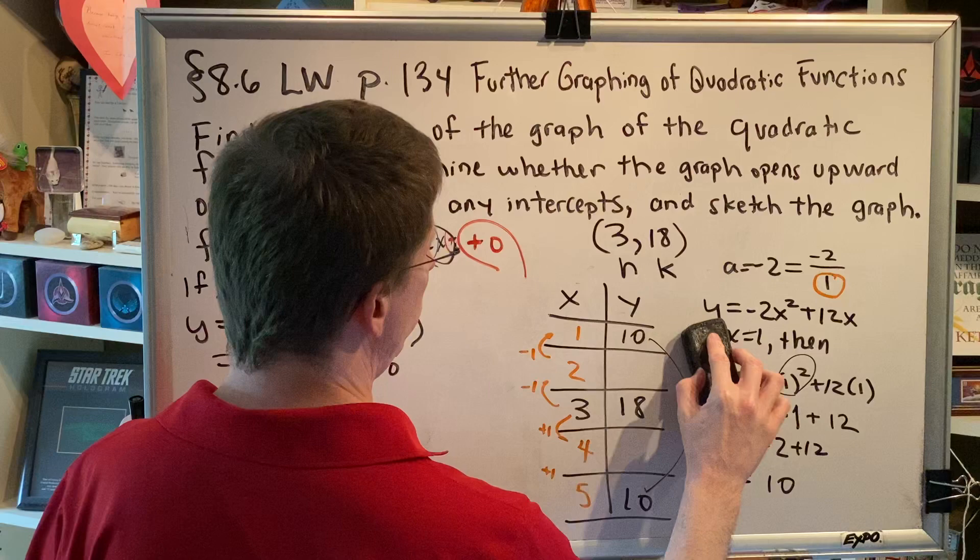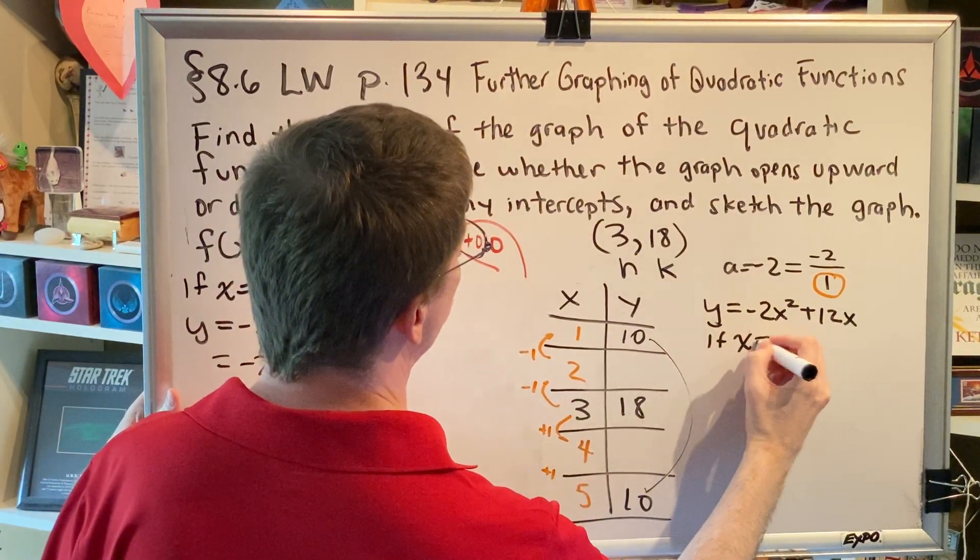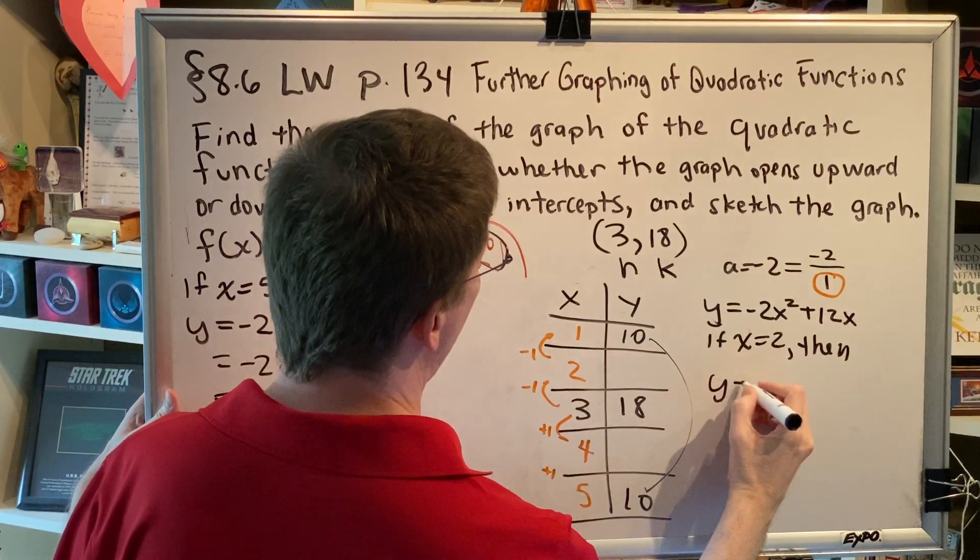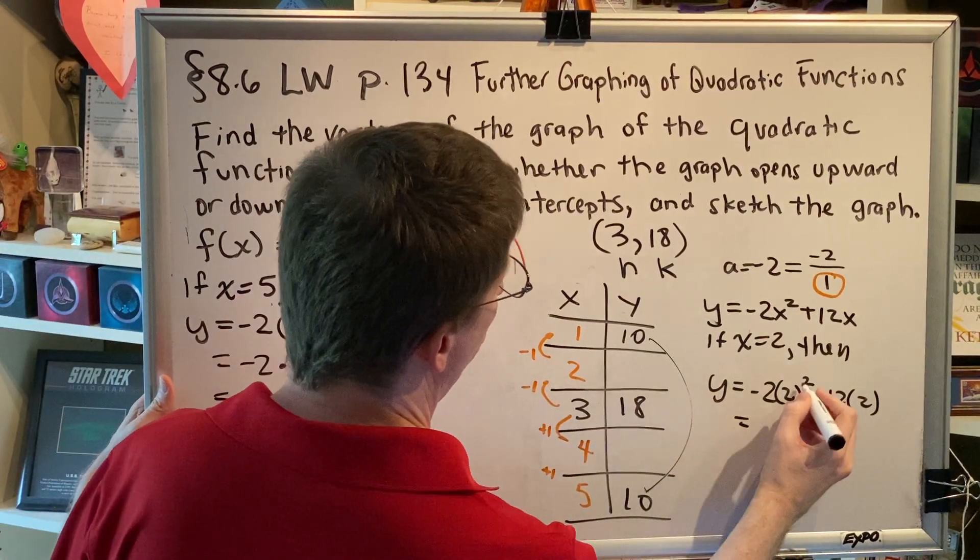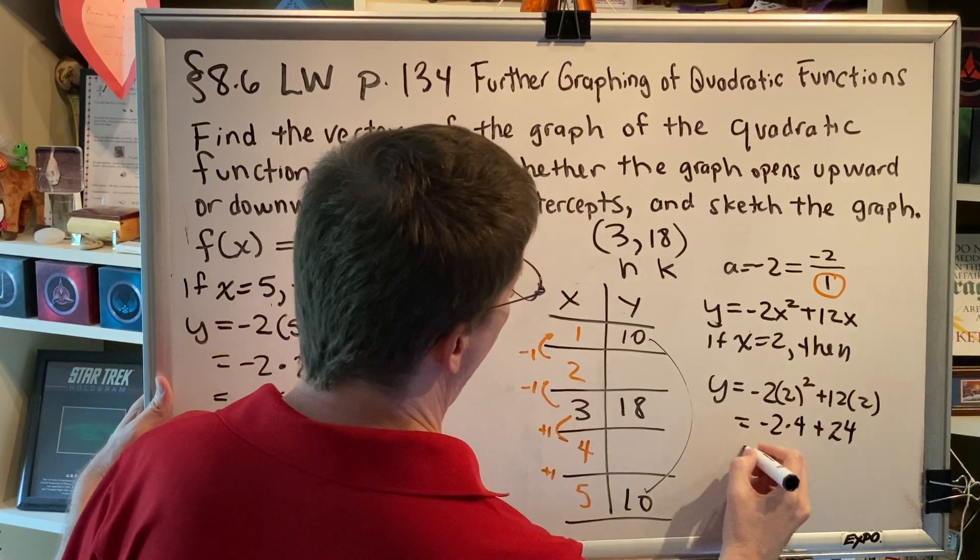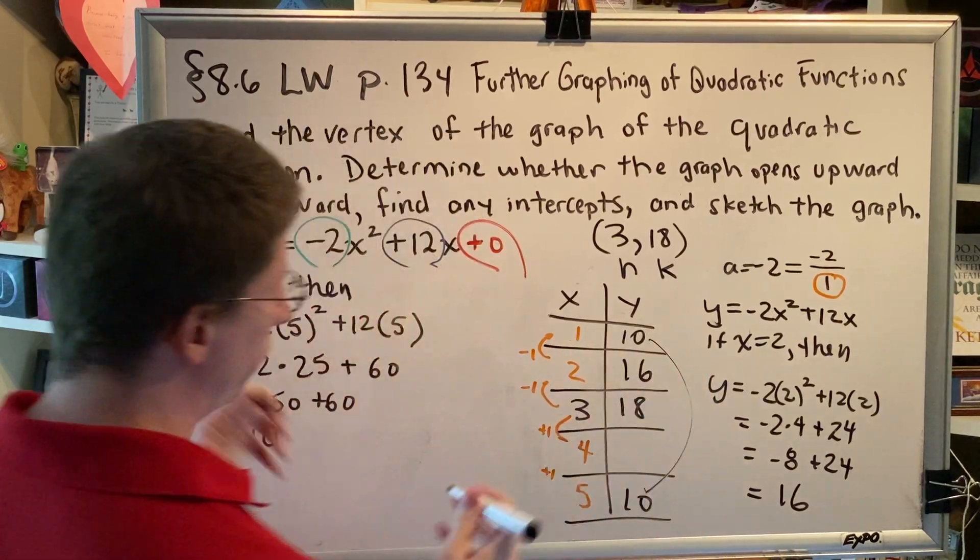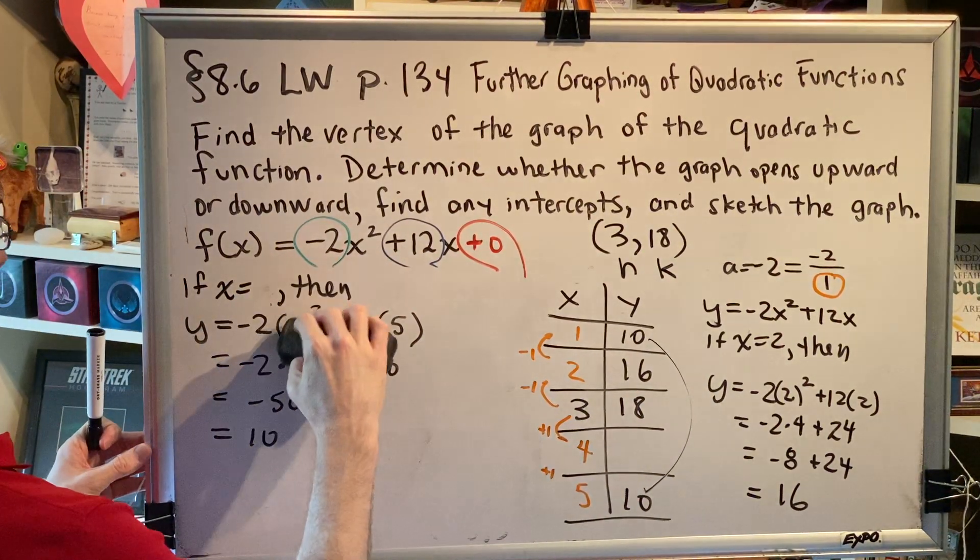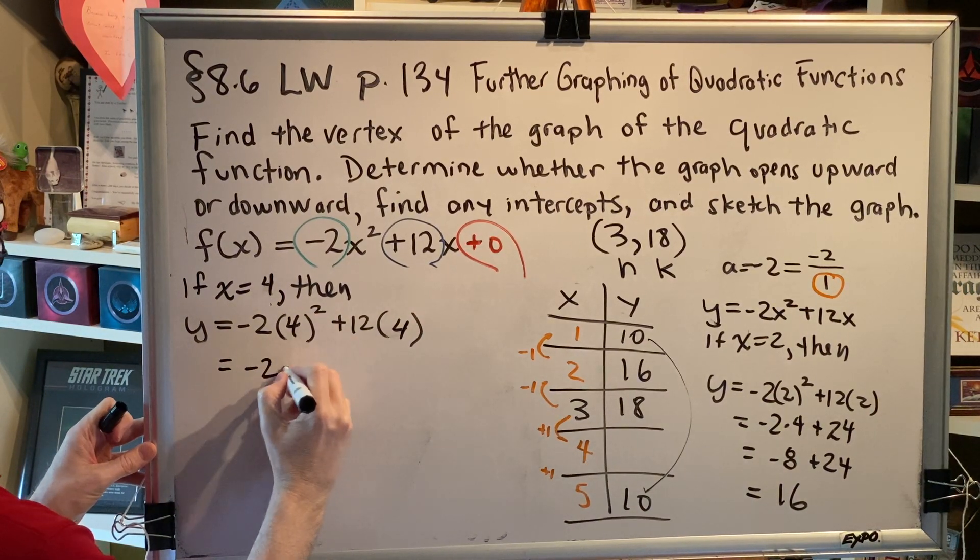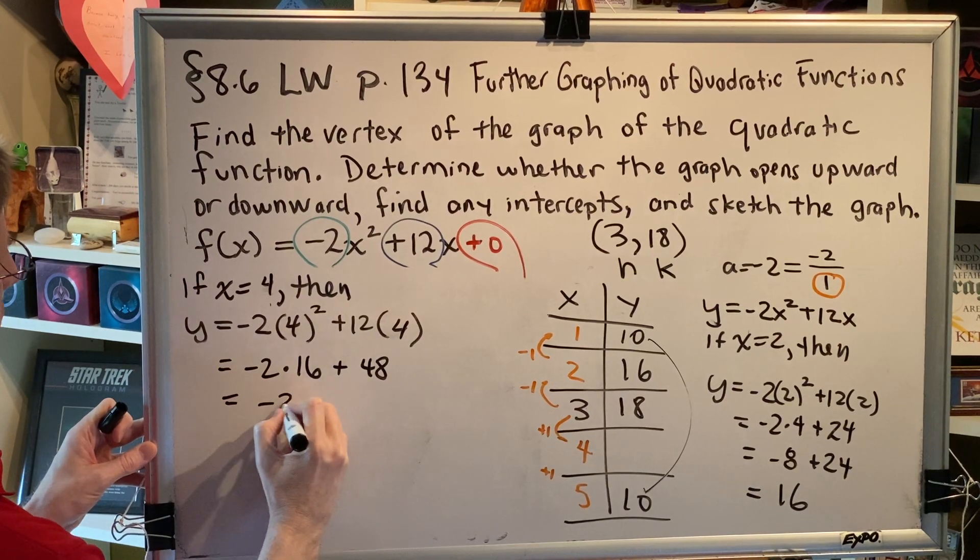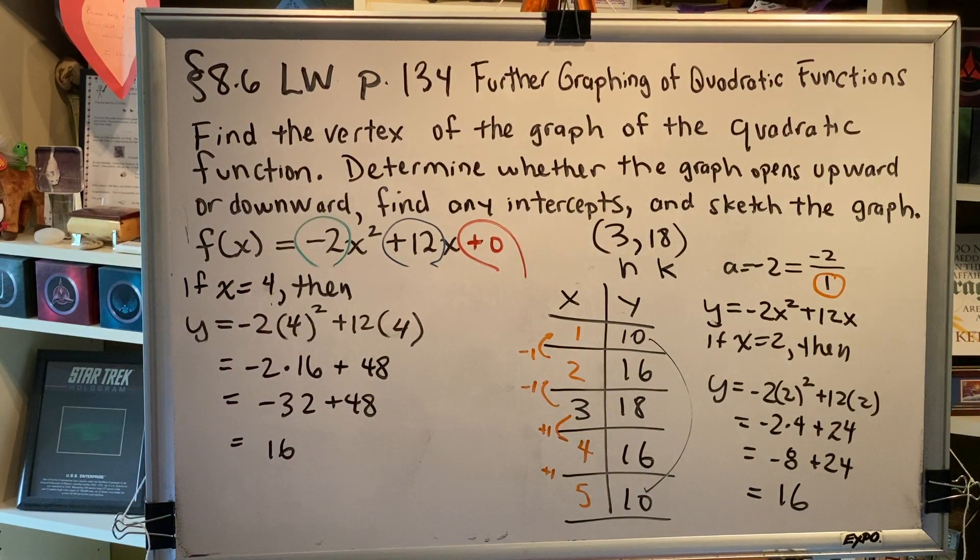Let's plug in x is 2 and x is 4. If x equals 2, then y equals -2(2)² + 12(2). 2 squared is 4. Negative 2 times 4 is negative 8. And negative 8 plus 24 is positive 16. Last one. If x equals 4, order of operations, 4 squared is 16. Multiplication. Addition. So now we have all of our xy values for our chart. With that, we can make our graph.